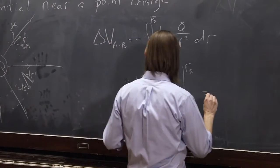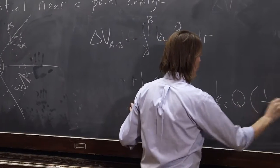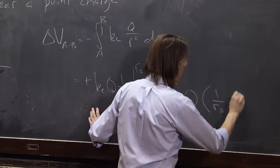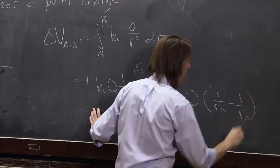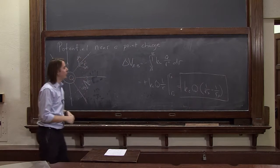then in the end, the actual potential, keq, 1 over rb, minus 1 over ra. So there it really is, is the potential difference near a point charge.